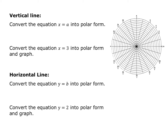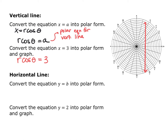Now we're going to look at a couple of common equations usually written in rectangular form and convert them to polar form. A vertical line in rectangular is x equals some number, or x equals a. From section 9.1, cosine of theta equals x over r, so x equals r cosine theta. Therefore, x equals a is the same as r cosine theta equals a. For example, x equals 3 becomes r cosine theta equals 3, which is the vertical line through radius positive 3.